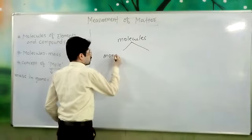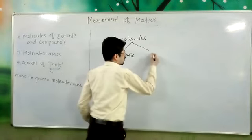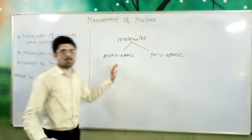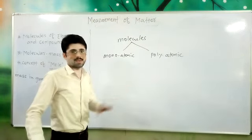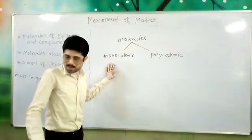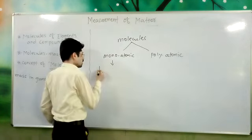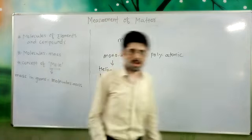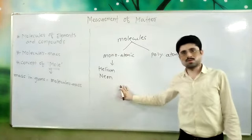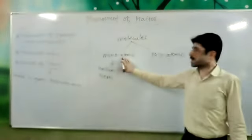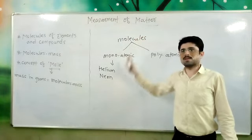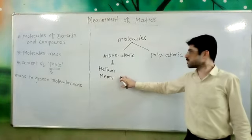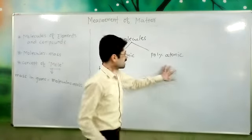The first type is monoatomic and the second type is polyatomic. There are some molecules present in nature which are already present in monoatomic form. The examples of such elements are Helium and Neon. These elements are present in monoatomic form in nature, so they are called monoatomic molecules.